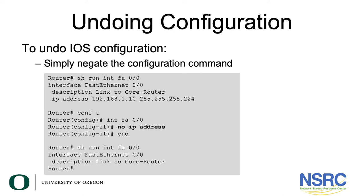To undo this configuration, go into configuration mode by typing 'conf t', then navigate into FastEthernet 0/0 and type 'no ip address' to remove the IP address configuration from the interface. Complete this by typing the 'end' command, which returns you to privileged mode. When you type 'show run interface FastEthernet 0/0', you will see that the IP address has been removed from the interface configuration.